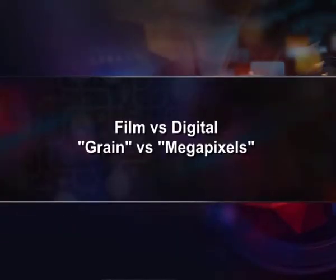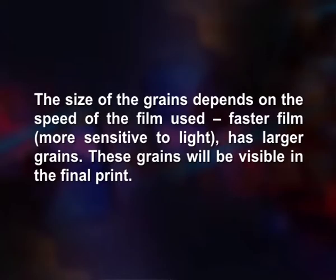Film versus digital: grain versus megapixels. You may be interested to find out how megapixels fit into the film versus digital debate. Digital camera quality is often measured in megapixels — more megapixels means every individual pixel or dot in the final picture will be smaller, and the smaller they are, the sharper the picture will be. For film, the equivalent of pixels are actually film grains. The size of the grains depends on the speed of the film used — faster film, more sensitive to light, has larger grains, and these grains will be visible in the final print.